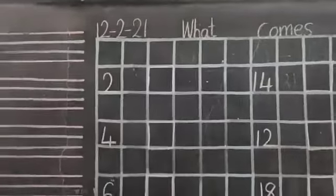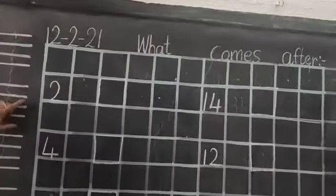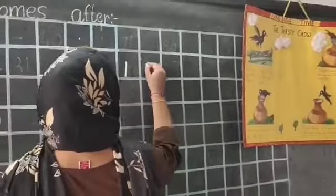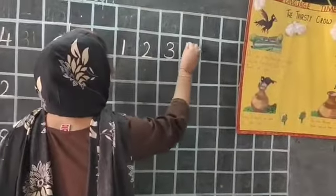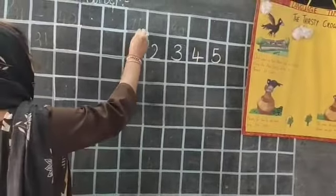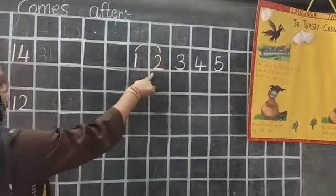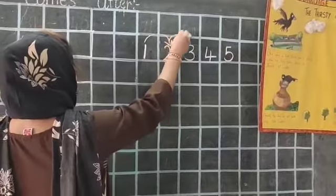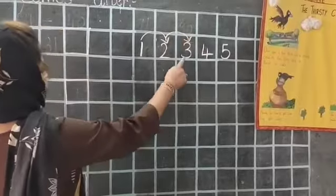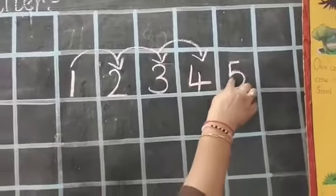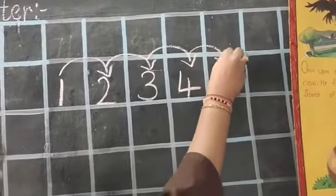You know numbers, children, 1 to 100, but this bit we are going to do 1 to 20. For example, I will show you. I will just write numbers 1 to 5: 1, 2, 3, 4 and 5. Now after 1, which number is coming? 2. After 2, next number? 3. After 3? 4. After 4? 5. Like this the numbers go on.